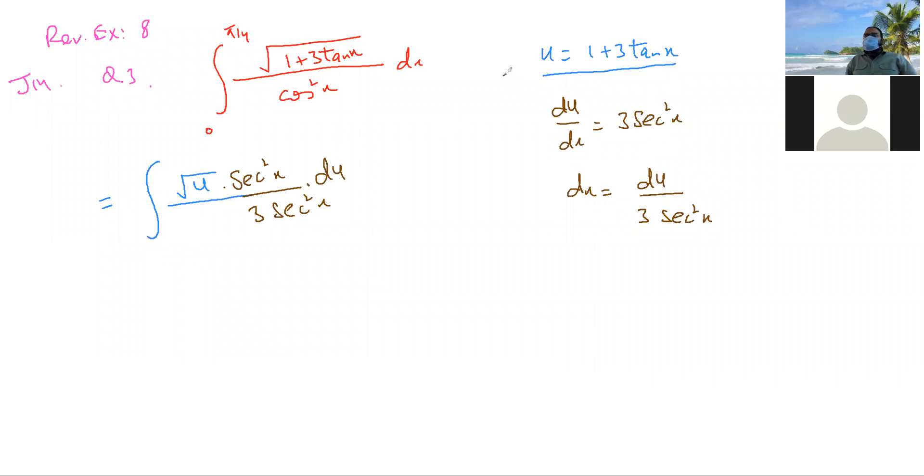Now please show all this working on the right side of your page over here. Now, when your x is 0, your u is going to be 1 plus 3 tan 0. What is tan 0? 0. So this u is going to be 1. So the lower limit over here is 1.